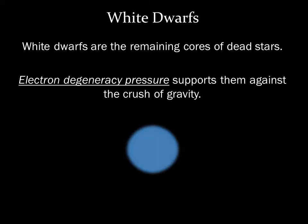A white dwarf is essentially the exposed core of a star that has died and has shed its outer layers in a planetary nebula. It's quite hot when it first forms, but it slowly cools with time. Electron degeneracy pressure supports the white dwarf against the crush of gravity. This is the type of pressure that arises when subatomic particles are packed as closely as the laws of quantum mechanics allow. In a white dwarf, the degeneracy pressure arises from closely packed electrons, so we call it electron degeneracy pressure.